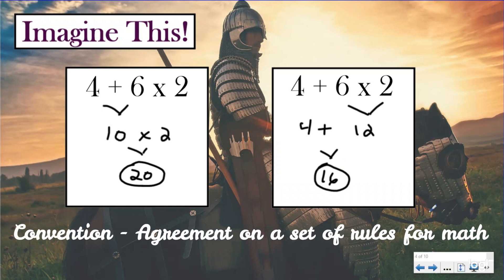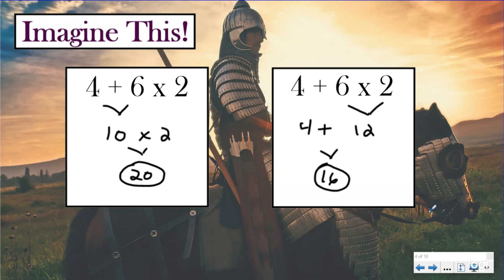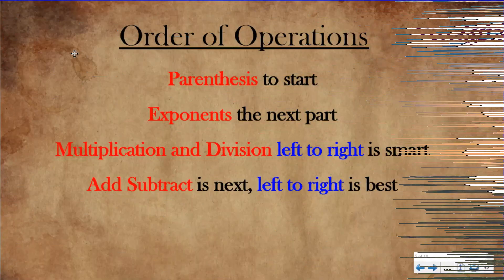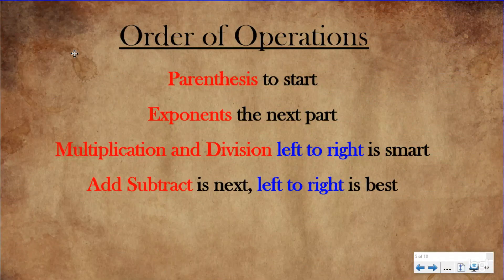A convention is an agreement on a set of rules for math. They said, we're tired of this fighting — let's just pick a way that you're supposed to solve these questions. We'll stop all the miscommunication. We're just going to make a math convention right here, right now. And when they did that, they came up with the order of operations.